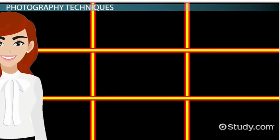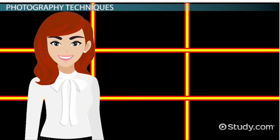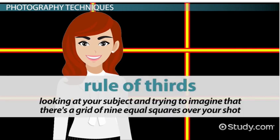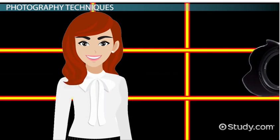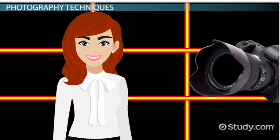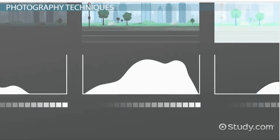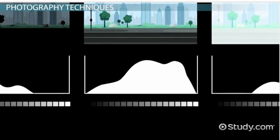Once you've decided on your format, then line up your shot. A good thing to remember is the rule of thirds, which is looking at your subject and trying to imagine that there's a grid of nine equal squares over your shot. This helps with alignment and framing, so your photographs look more balanced and all of the action isn't to one side or the other.